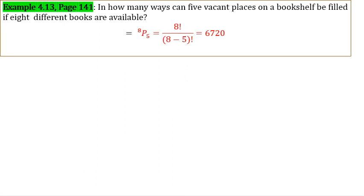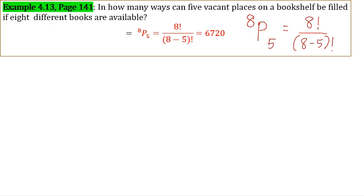Example 4.13, page 141: In how many ways can 5 vacant places on a bookshelf be filled if 8 different books are available? We use the formula 8P5 = 8! / (8 − 5)! Using the calculator, we get 6,720.